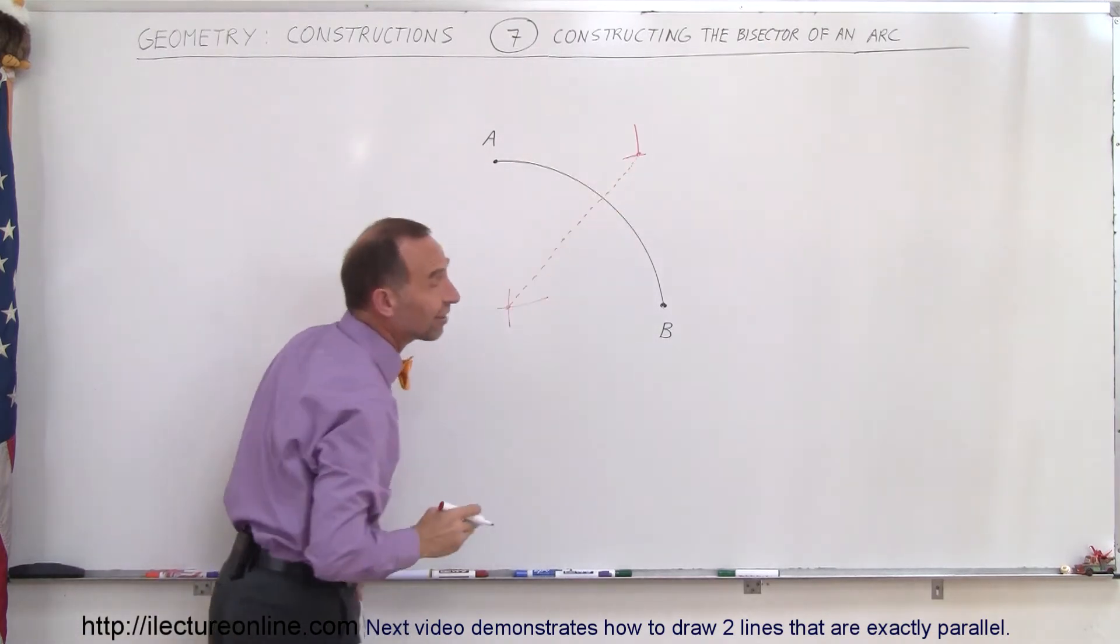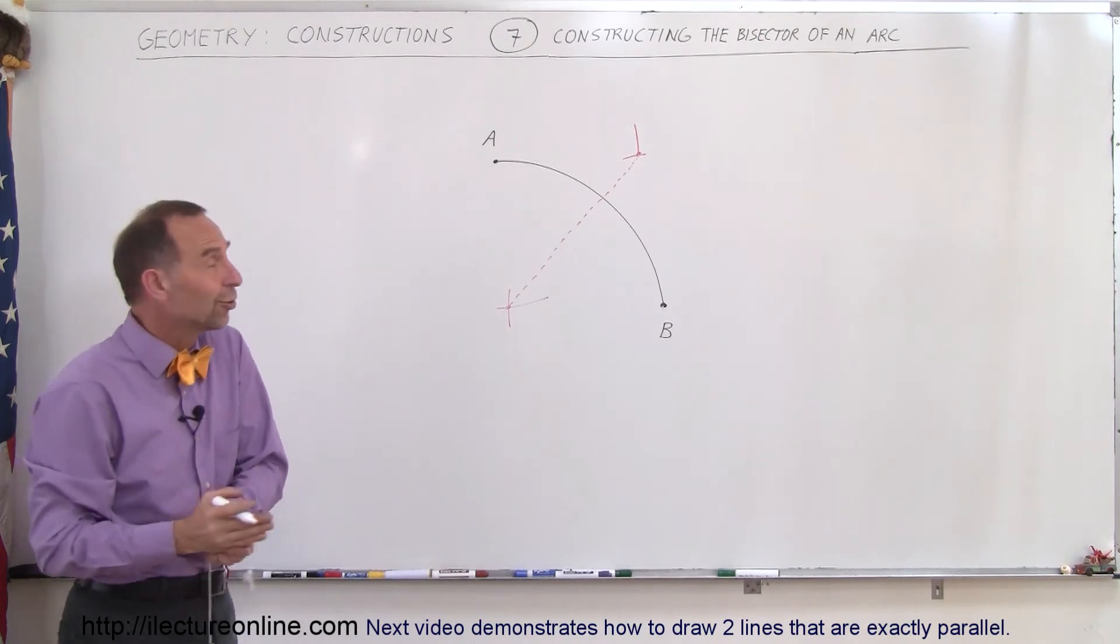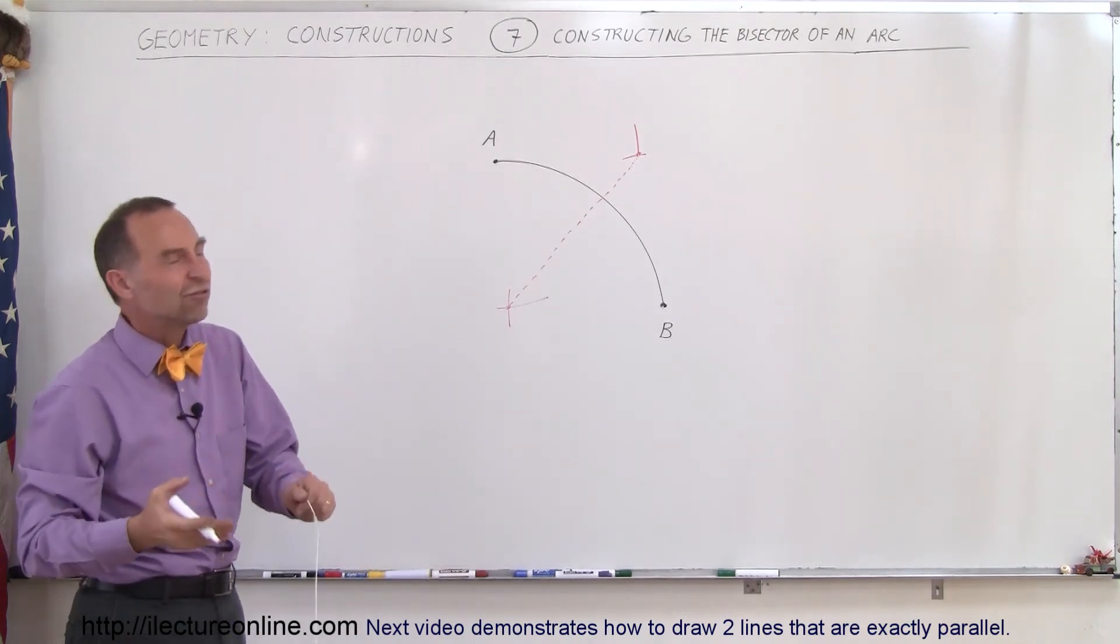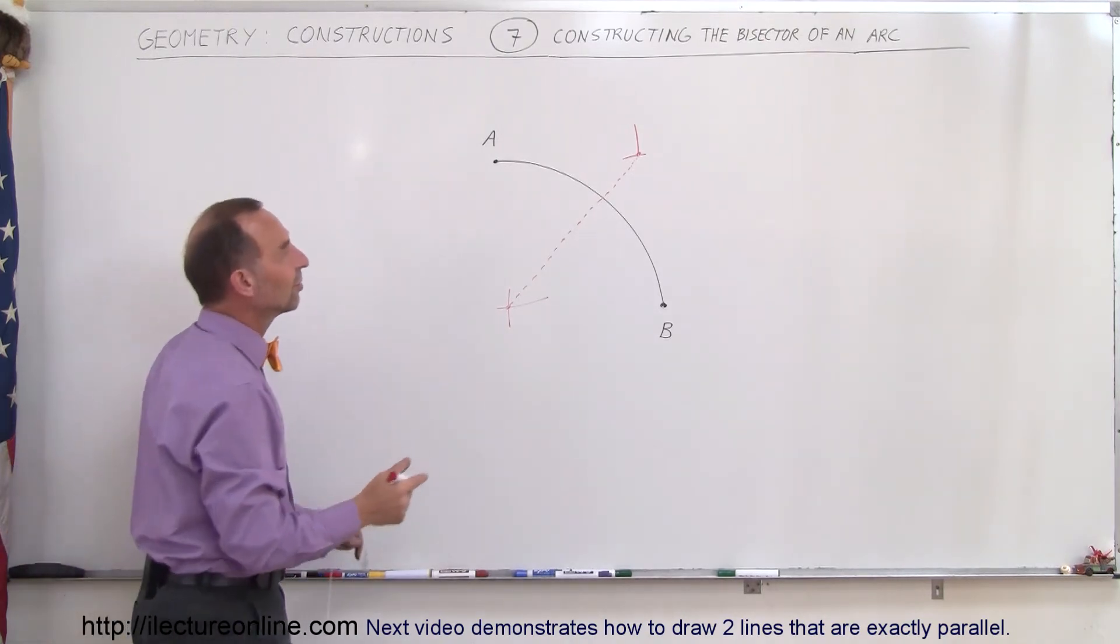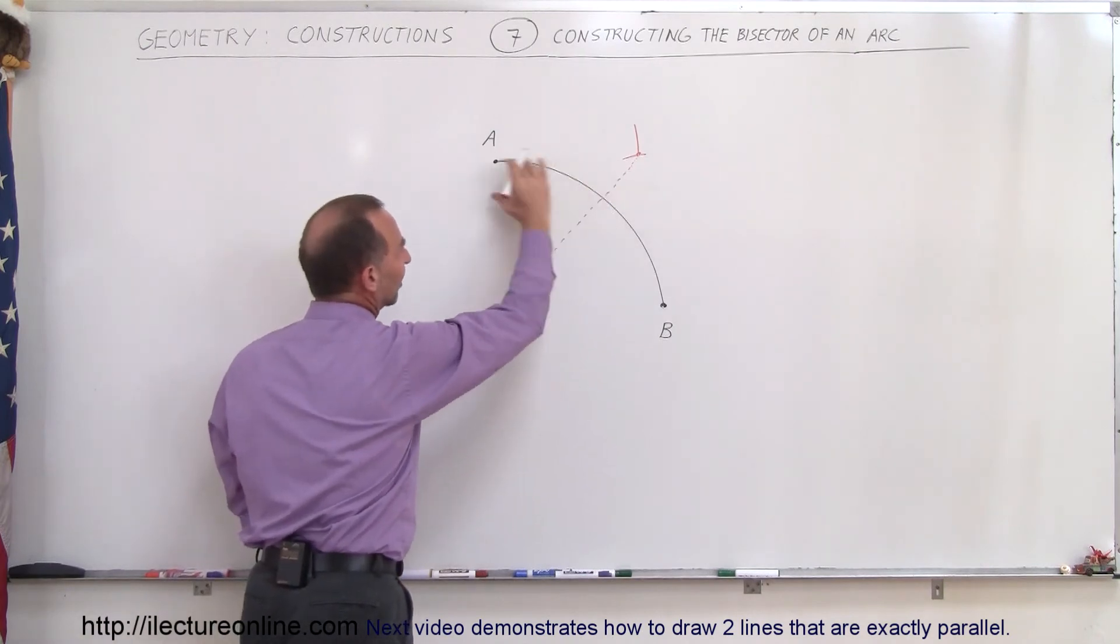So it takes the arc and splits it into two equal parts. So this line then becomes the bisector. It doesn't have to be perpendicular to the arc. It will be. It doesn't have to be. But it still suffices. This is what's called the bisector of this arc.